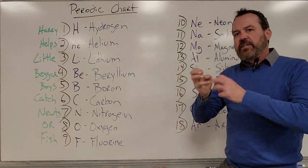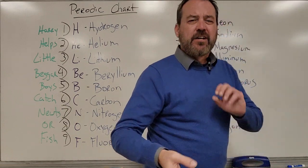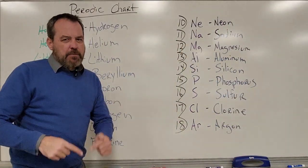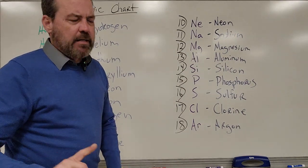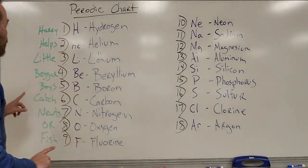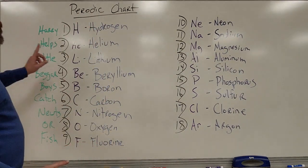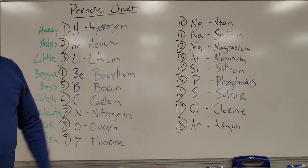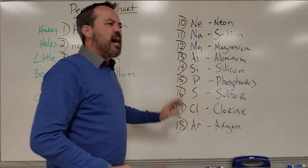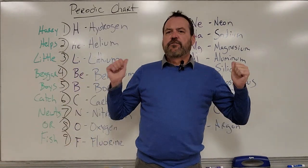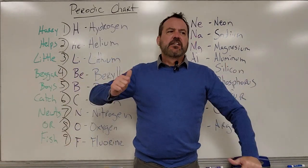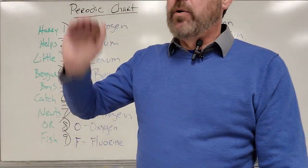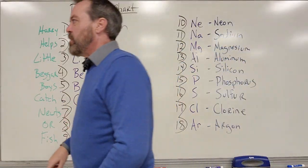Putting them in order becomes super important because it's critical in determining how these molecules are going to interact with each other and how much they weigh. So what we've got here is 1 through 18. I like to split it up into two groups of nine and use two different mnemonics to keep the elements in order.